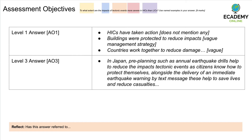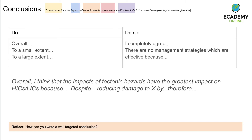Here's an example of a really good paragraph: 'In Japan, pre-planning such as annual earthquake drills help to reduce the impacts of tectonic events as citizens know how to protect themselves. Alongside the delivery of an immediate earthquake warning by text message, these help to save lives and reduce casualties.' There are plenty more paragraphs needed, and a judgment must be made at the end for a level nine. For most nine mark questions, you must write a conclusion — go back to the original question and answer it specifically, saying to what extent the impacts are more or less severe in HICs or LICs.